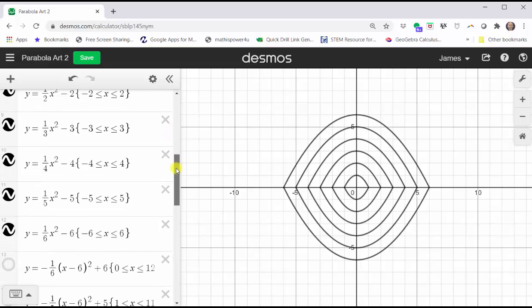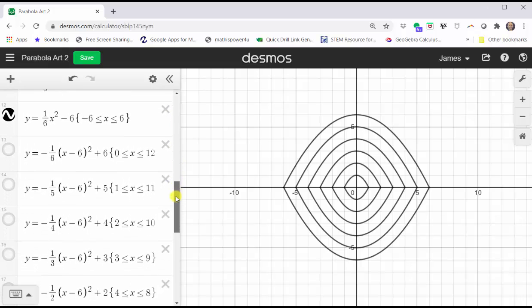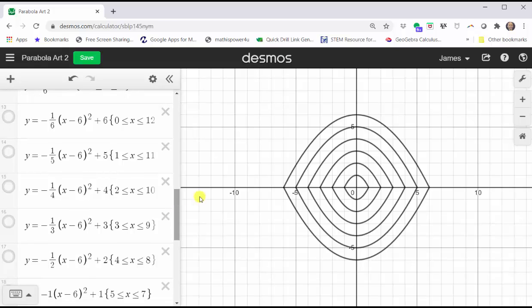To expand the artwork, I'm going to add 12 more equations. I've already entered them, I'm just going to turn them on. As I turn them on, you'll see them appear on the right.